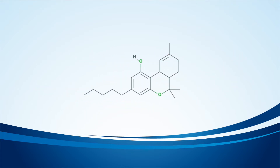There are standard practices for naming compounds, and they include rules for how to number the atoms in the molecule, like this. Notice how we skipped those atoms that are at the connecting points between rings? Here the double bond extends between carbons 9 and 10, and according to the naming rules, the bond gets named for the lower carbon number, making this isomer Delta 9 THC.